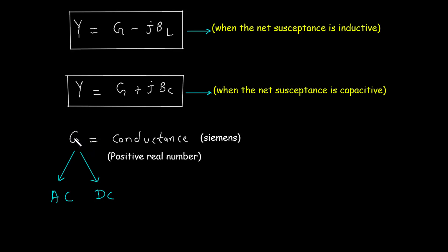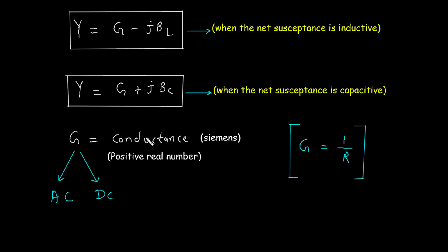Conductance G is observed in both AC and DC. Its unit is Siemens and it is a positive real number. Conductance G = 1/R, so it is simply the reciprocal of resistance.